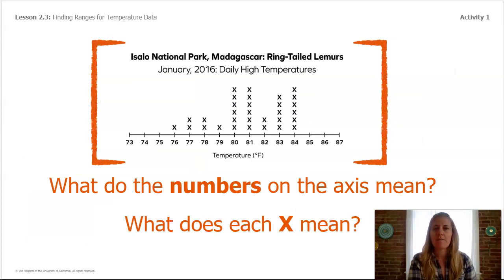Let's just review some of the features of a line plot. This one here is for Isalo National Park. This is where the ring-tailed lemurs live. Let's remind ourselves, what do the numbers on the axis mean? And that would be that long line across the bottom. What are all of those numbers? What do you think each X means?